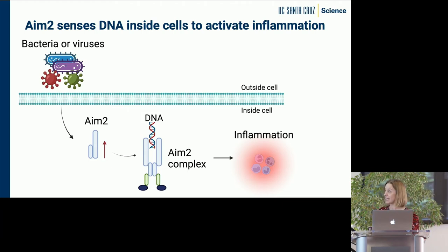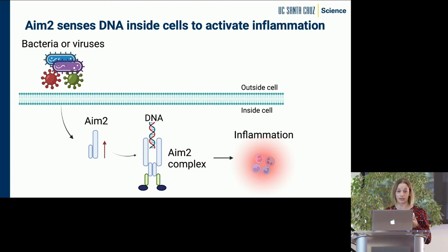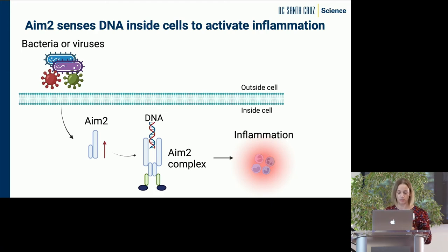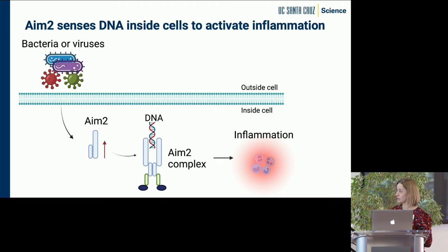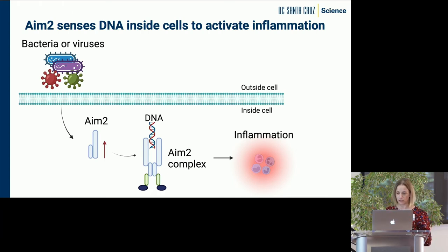What AIM2 does in your immune system is that it acts as a sensor — it can recognize bacteria and viruses. When they get into your cells, they turn on this particular protein. This protein recognizes the DNA and kicks off inflammation. So it plays a really central role in our immune system for controlling inflammation.